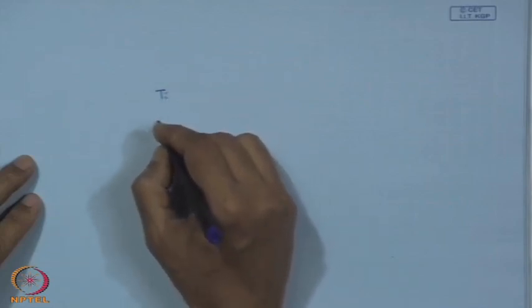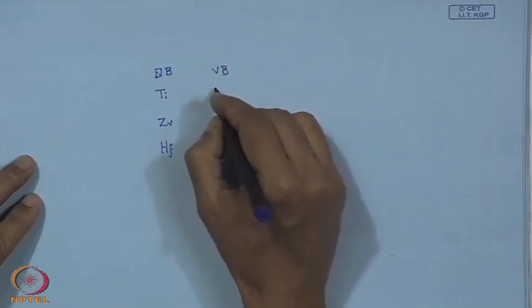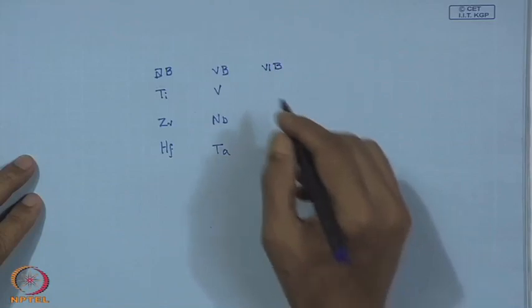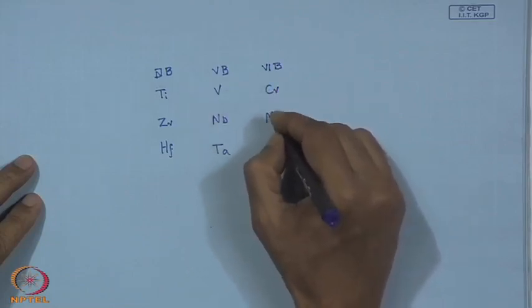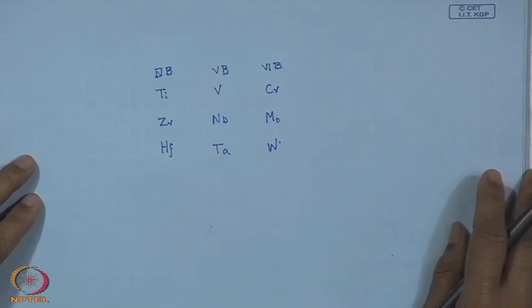In this matrix: Group 4B contains titanium, zirconium, and hafnium; Group 5B contains vanadium, niobium, and tantalum; and Group 6B contains chromium, molybdenum, and tungsten. All these strategic materials are used for high-end applications requiring extremely high wear resistance, hardness, anti-welding property, and chemical stability. Their carbides, nitrides, borides, and oxides can provide these properties.